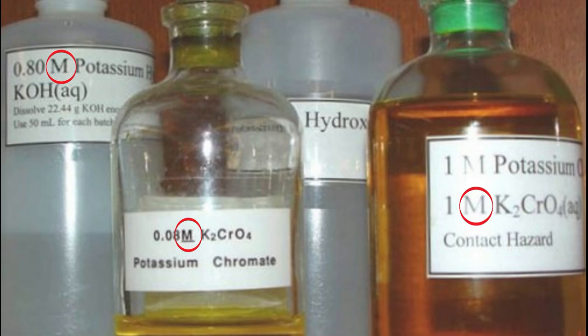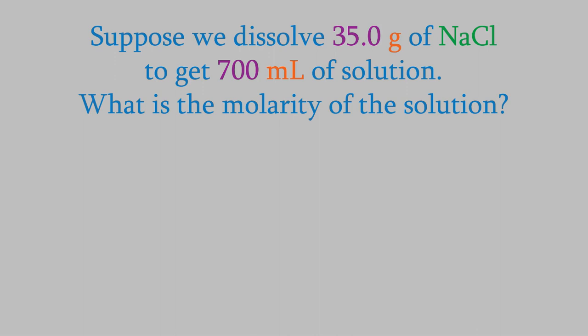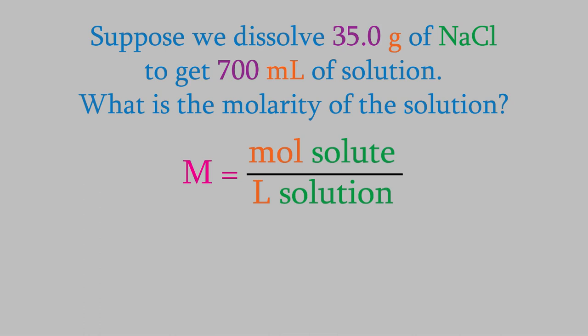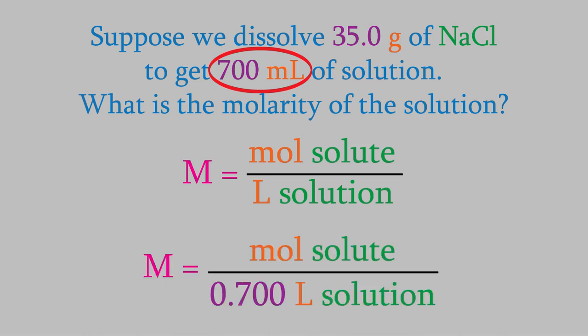To start off with, let's do a quick calculation with the unit you already know how to use, the molarity. That way, we'll have something to compare to when we look at the other kinds of units. Suppose we dissolve 35.0 grams of sodium chloride, and dissolve it in water until we have 700 mL of solution total. What's the molarity of the solution? The molarity is the moles of solute over the liters of solution. The liters of solution is easy — we have 700 milliliters, so that's 0.700 liters.